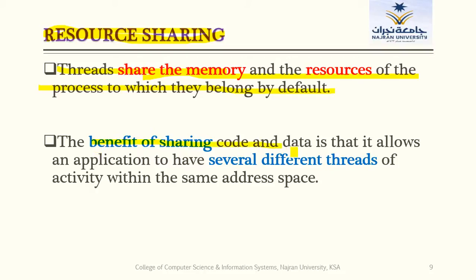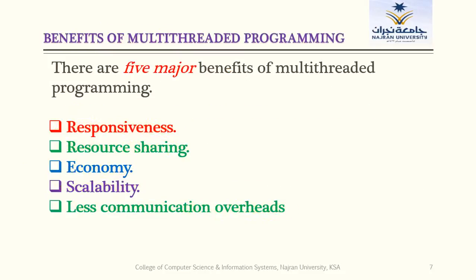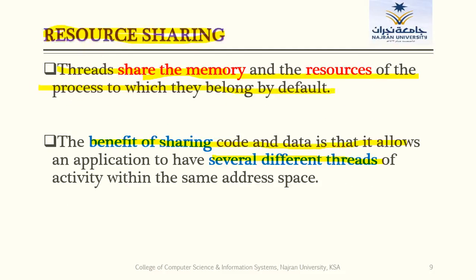The benefit of sharing code and data is that it allows an application to have several different threads of activity within the same address space. At the same address space, many threads are available, and since they belong to the same address space they can share code and data. Resource sharing is our second benefit — if we are using multi-threaded programming, resource sharing will be more efficient than with single-threaded programming.